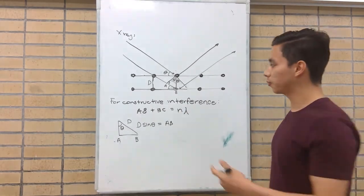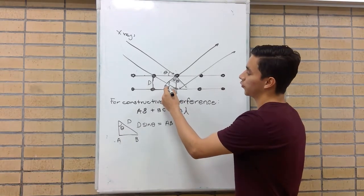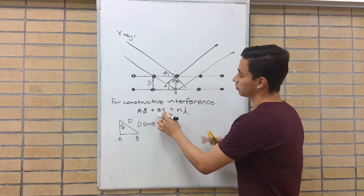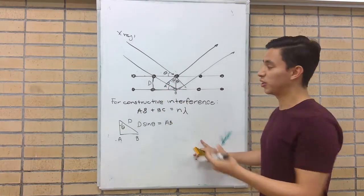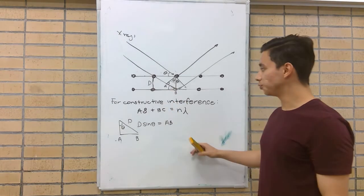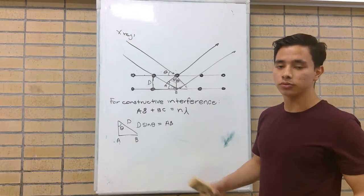And what is the difference of path? Taking a close look, we can figure out that it is AB plus DC. Because if we extract that path from the second ray, both paths will be equal.